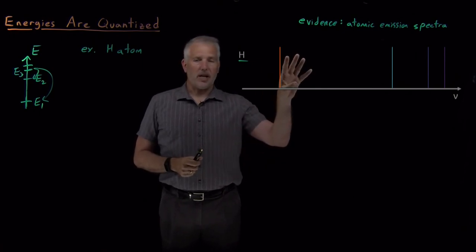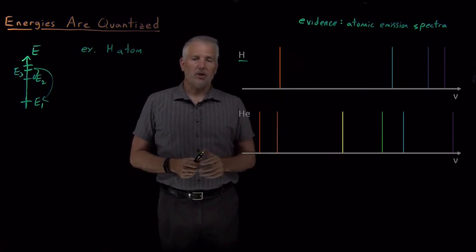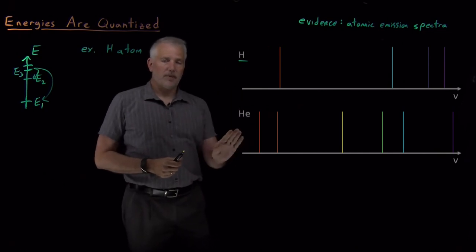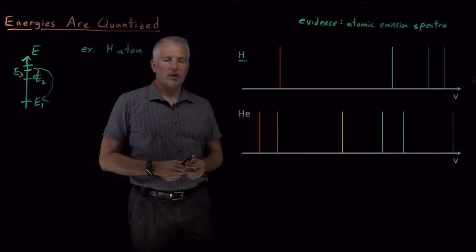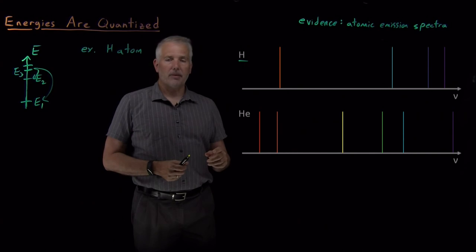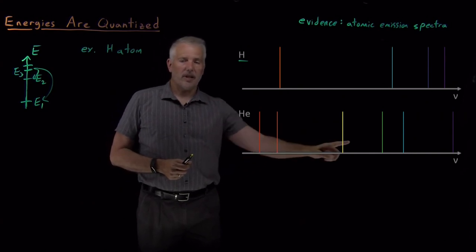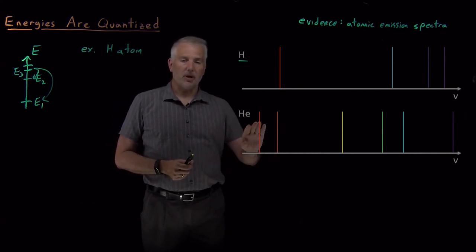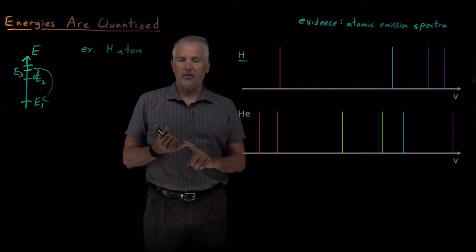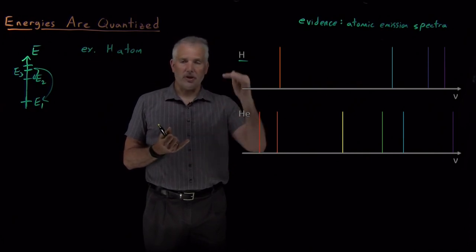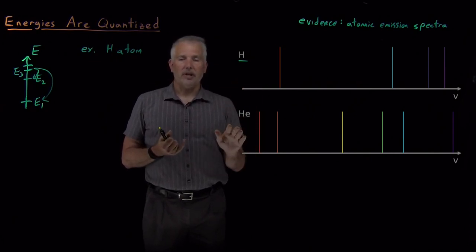That's true not just for hydrogen. If I pull up another picture of what that looks like for helium, this is the emission spectrum for a helium atom. Notice that the colors of light given off by a helium atom are not the same as they are for hydrogen, because the energy levels are different for hydrogen than they are for helium.